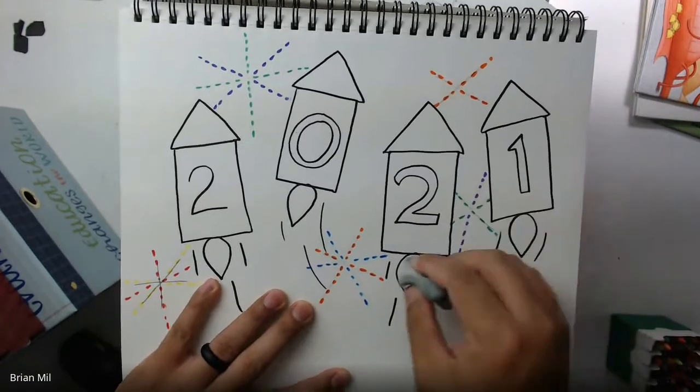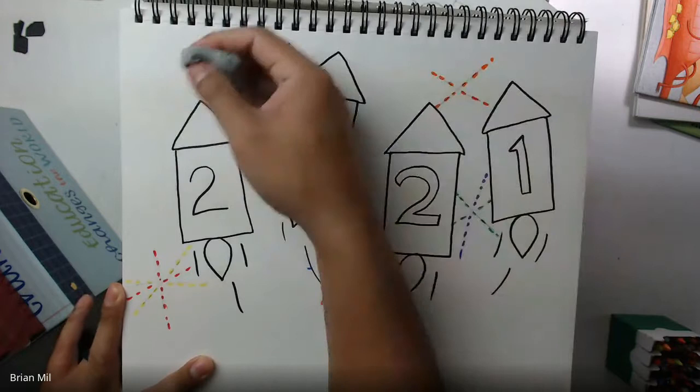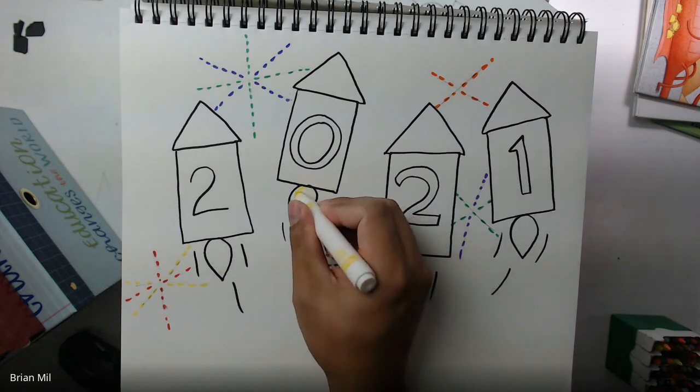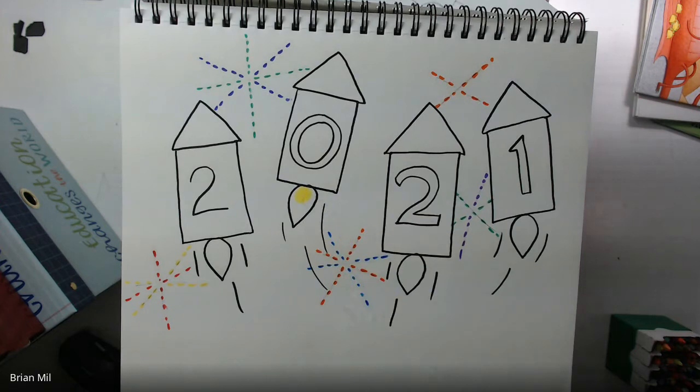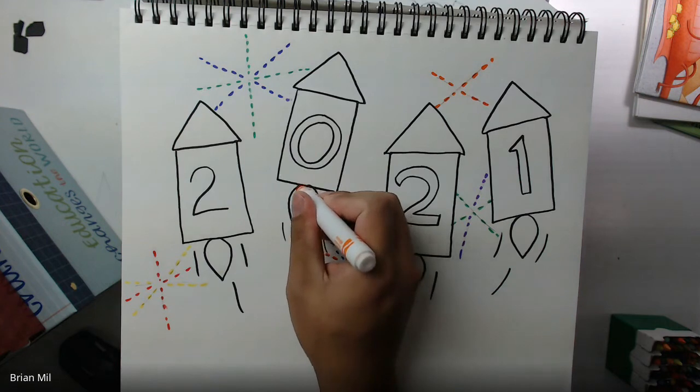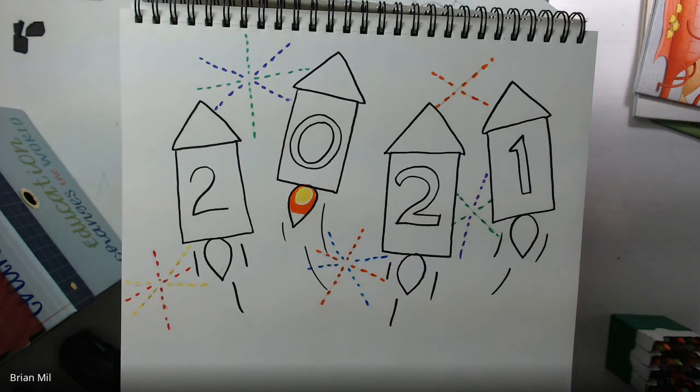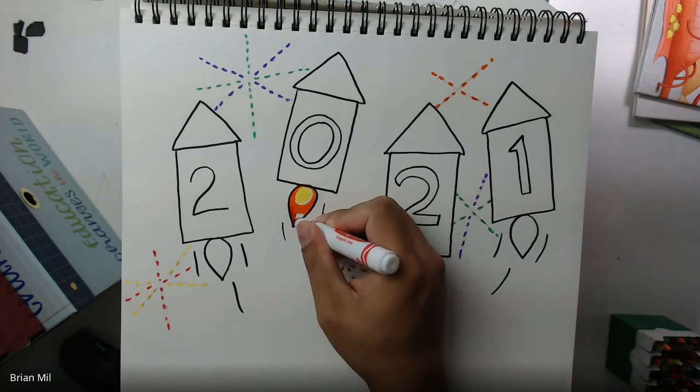Alright, I have a couple more tips to show you guys when drawing this project. For instance the bottom flame underneath these rockets, I like to do a little yellow circle right on top. And then what I do is that I take an orange and I kind of just color the top portion of this teardrop and I try to avoid the bottom tip of it. And then I add red to the very bottom and it kind of looks more like a flame.